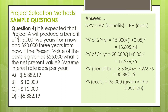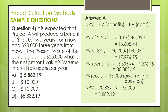We calculate PV of the second year and PV of the third year like we did in the previous question. The present value of benefits will be PV of second year plus PV of third year, therefore PV of benefits equals $30,882.19. Since the PV of cost is given in the question, we can now calculate the net present value. The calculation gives us the result, which is also the answer to the question.